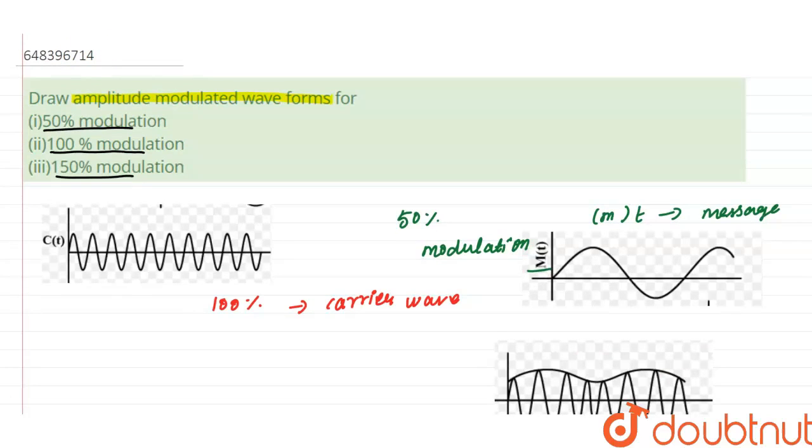So the final amplitude modulated waveforms: 50% of the modulation, 100% of the modulation, and 150% of the modulation. Thank you.